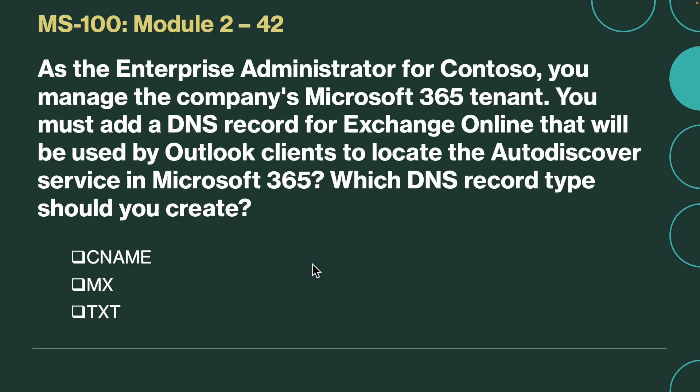Next question. As the enterprise administrator for Contoso, you manage the company's Microsoft 365 tenant. You must add a DNS record for Exchange Online that will be used by Outlook clients to locate the auto-discover service in Microsoft 365. Which DNS record type should you create? The correct answer is CNAME. Outlook clients use the CNAME record to locate the auto-discover service in Microsoft 365.